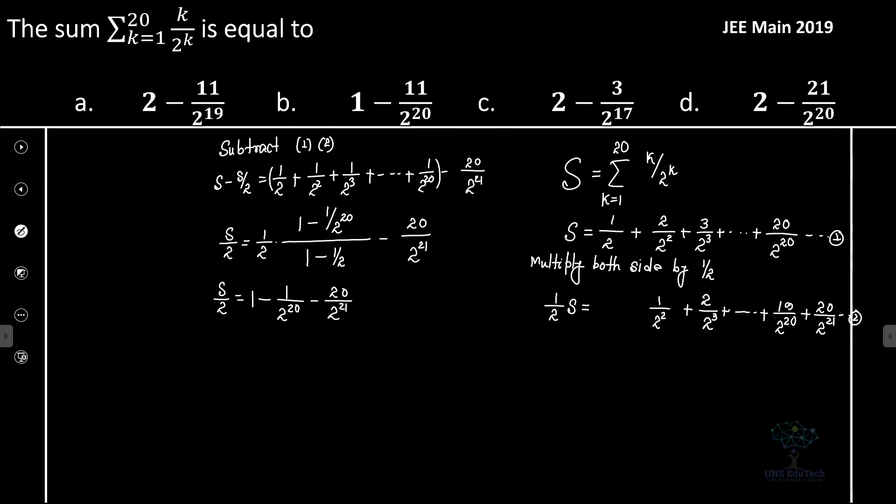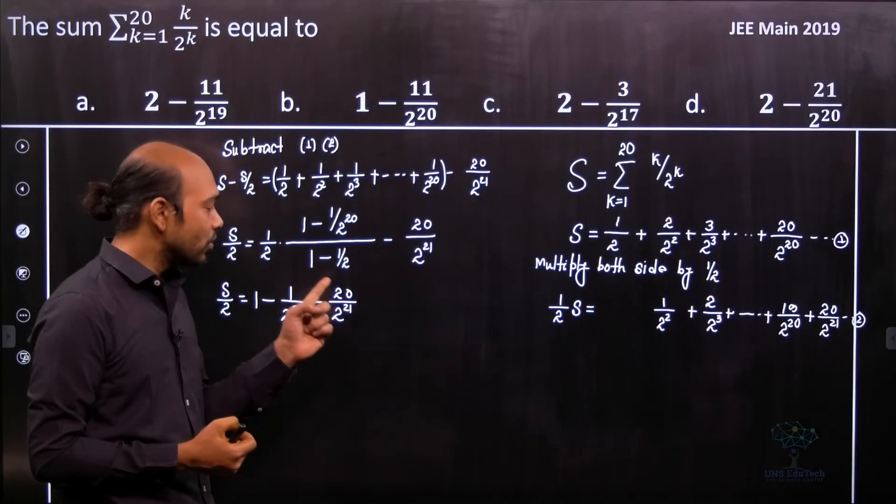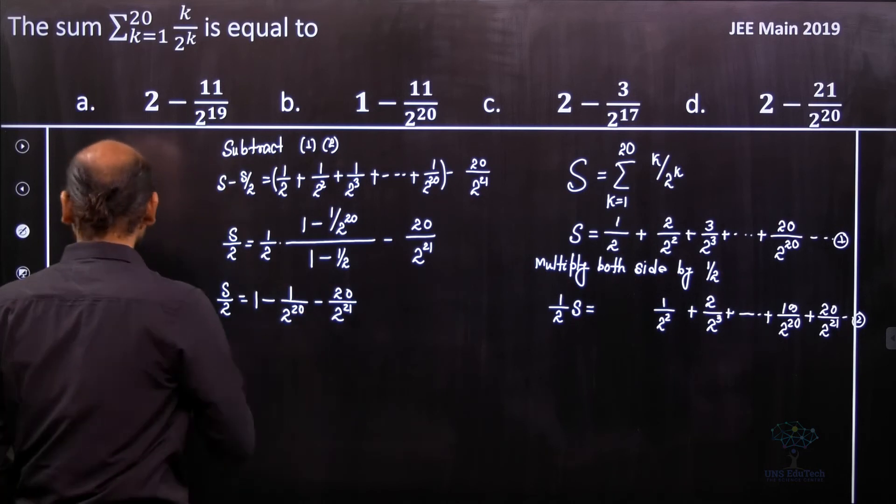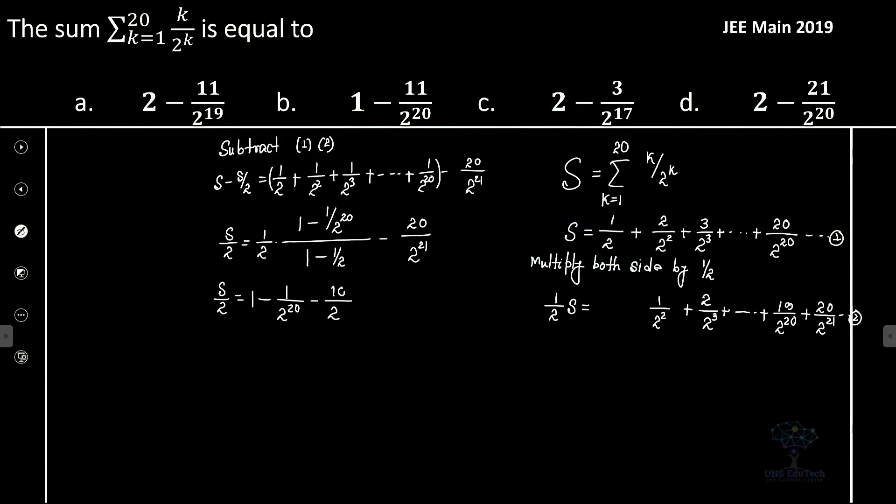Now see that here this is 20. So 20 can be easily written down as 2 into 10. So that 2 and it is 2 to the power 21. So easily we can write it as 10 divided by 2 to the power 20. So at the end we can see that s by 2 is definitely equal to 1 minus 11 by 2 to the power 20. If I multiplied by 2 both sides we can get s is equal to 2 minus 11 by 2 to the power 19. So that's the sum. So that's the sum of this series.